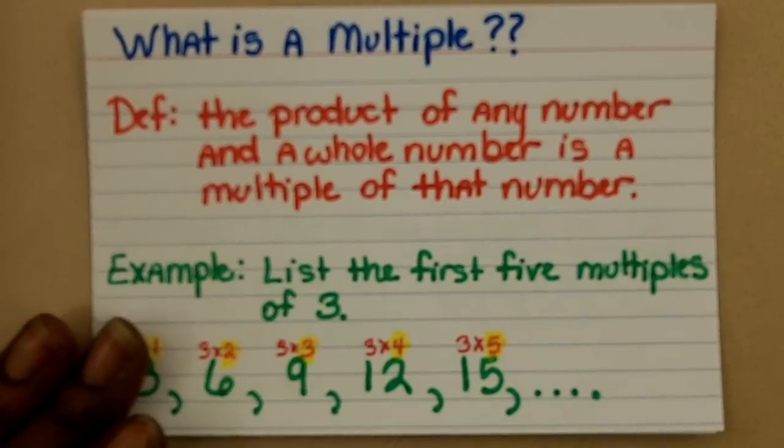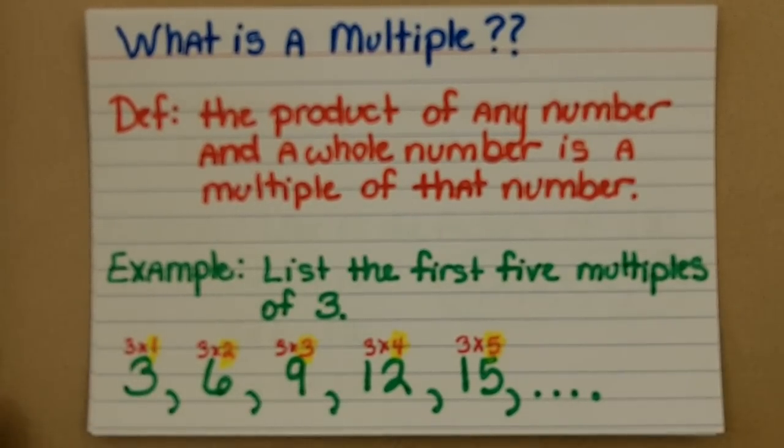First, what is a multiple? Well, by definition a multiple is the product of any number and a whole number is a multiple of that number.